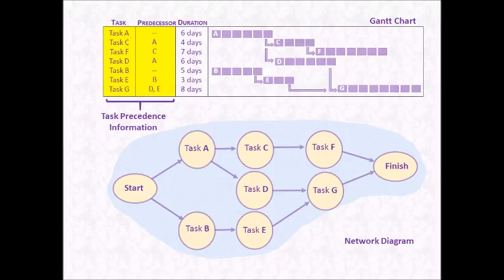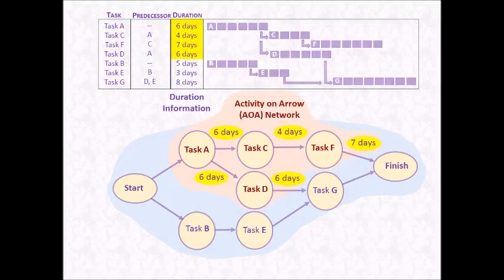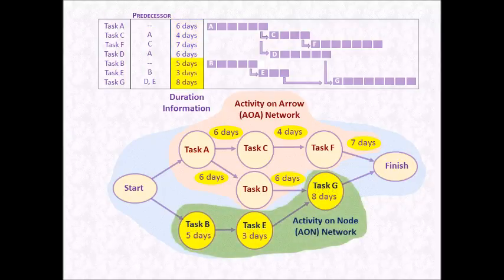We're going to take the task precedent information from our Gantt chart and create a very simple network diagram. We'll illustrate each task as a node and connect the nodes using the precedent information, as you can see here in this network diagram. This diagram doesn't tell us much more than the Gantt already told us, but it's a start. We can now add duration information onto our simple network diagram, and this is done one of two ways. We can either add the duration information onto the arrows that connect the various nodes — this is called Activity on Arrow, or AOA, network diagram. Alternatively, we can show the duration information within the node itself, as shown on the green part of the network diagram. This is called Activity on Node, or AON, network diagramming technique. As you can see, the information displayed is the same. It's just how you choose to display it.